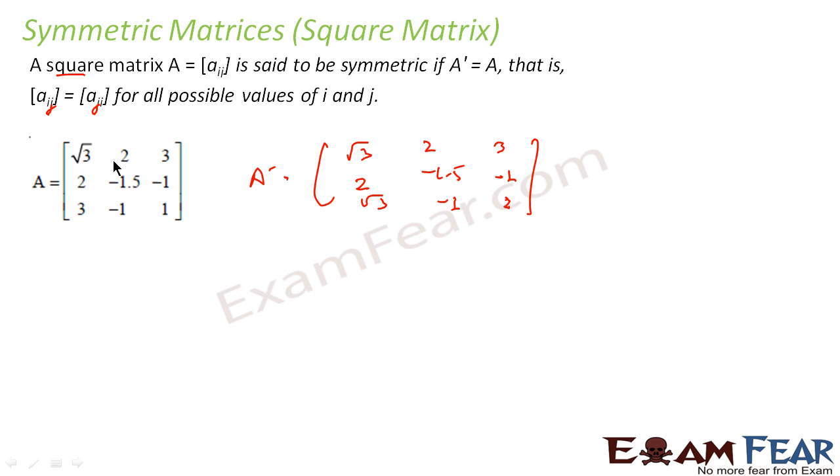A shortcut to find whether a matrix is symmetric or not: this is a long-cut process where you have to find the transpose and compare. One shortcut is you just ignore the diagonals, ignore whatever is there in the diagonals, ignore this part. If you ignore this part and then see if this element and this element, the corner elements are equal, this is equal to this, then it is a symmetric matrix. Just a shortcut.